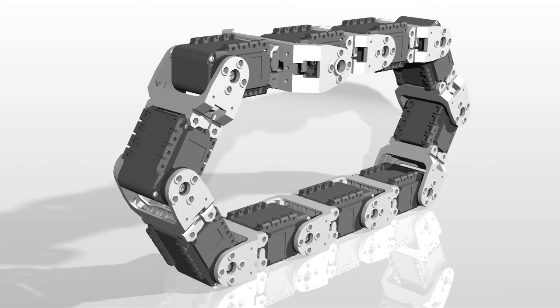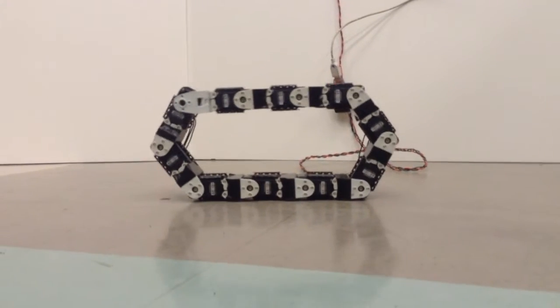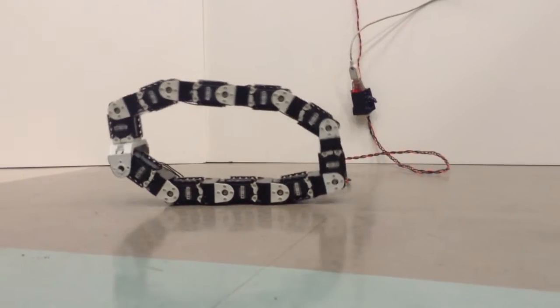The many degrees of freedom of snake robots allow them to navigate a wide range of environments. The main objective of our project was to explore rolling as a possible method of locomotion for snake robots.